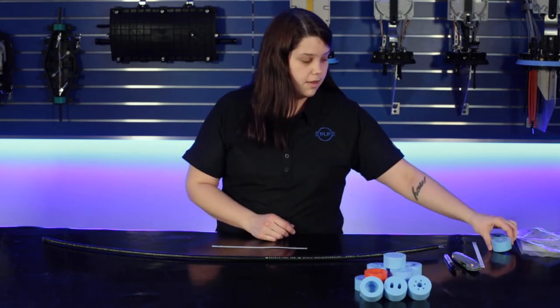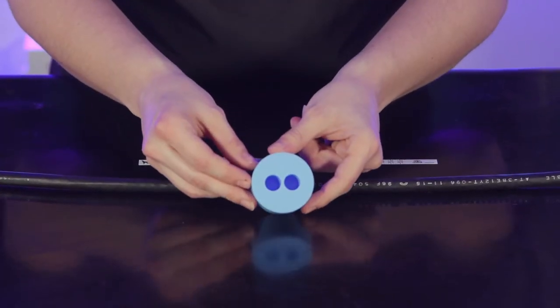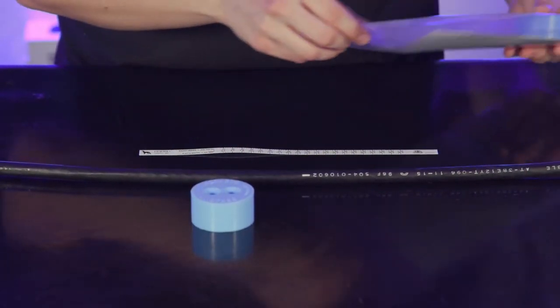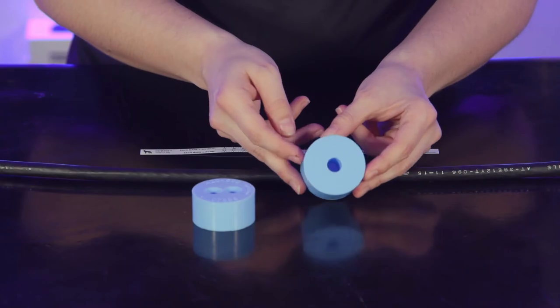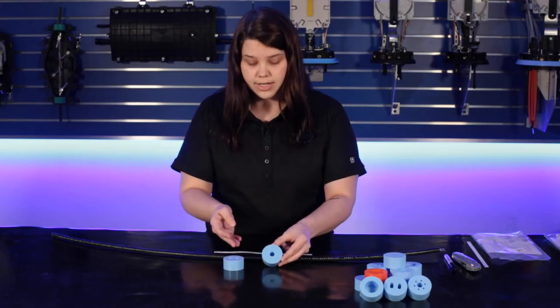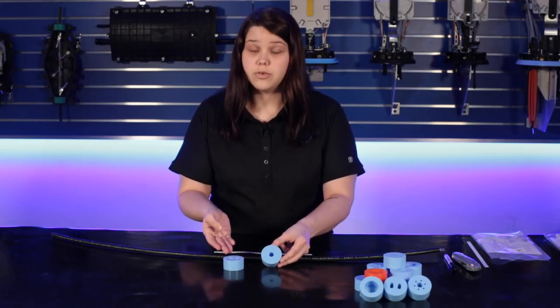Now that I know my cable is 0.48 inches in diameter, I have two options in my grommet. I've got a two-hole grommet or I can use this one-hole grommet here. How do I decide between the one-hole or the two-hole grommet?